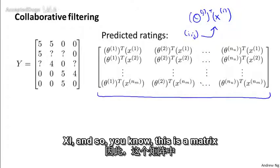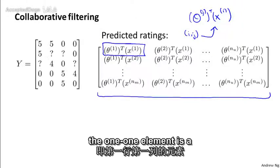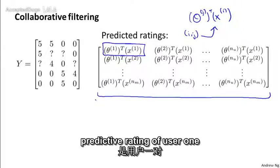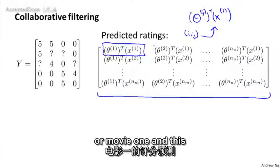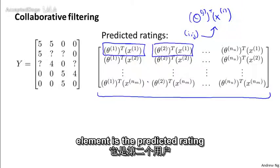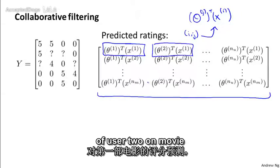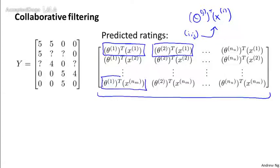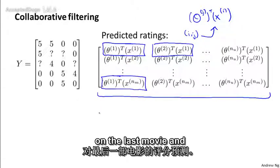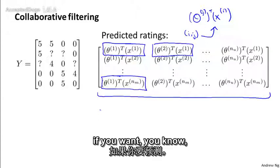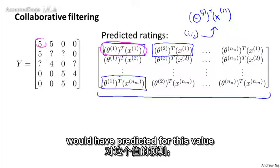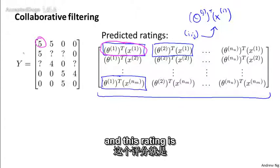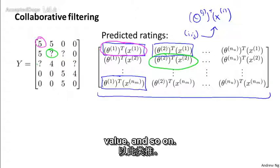And so this is a matrix where this first element, the one-one element is the predicted rating of user one on movie one. And this element, this is the one-two element, is the predicted rating of user two on movie one, and so on. And this is the predicted rating of user one on the last movie. And if you want, this rating is what we would have predicted for this value, and this rating is what we would have predicted for that value, and so on.